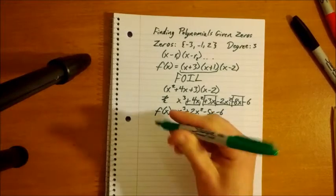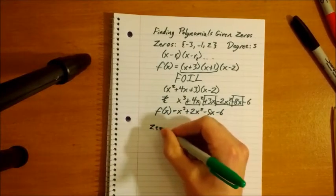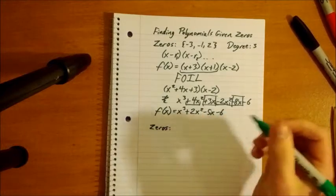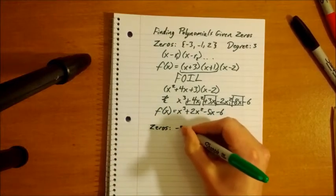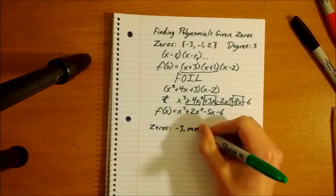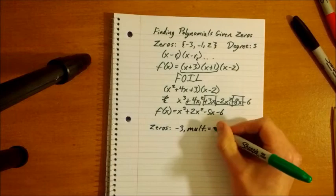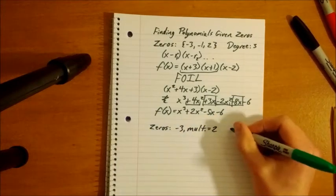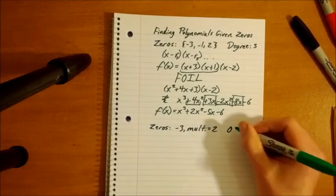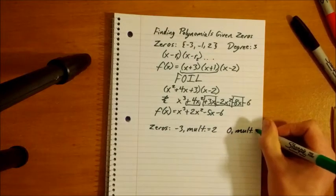Okay, now we might get a little more complicated by adding multiplicity, but it's really not that much more complicated. So, say for example, you have zero is negative 3, with a multiplicity of 2. And then another zero might be 0, with a multiplicity of 1.